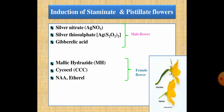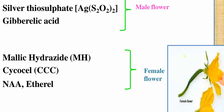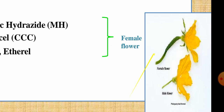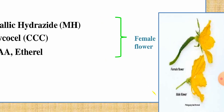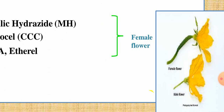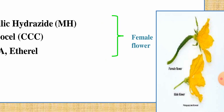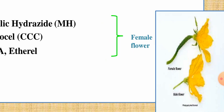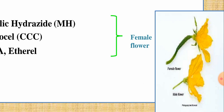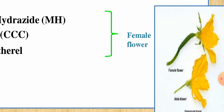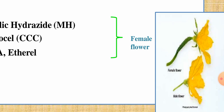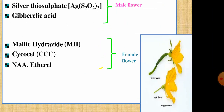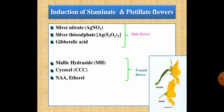This is the male and female flower of cucurbits. When you see the male flower, there is no enlargement of the ovary. In the female flower, the portion attached beside the flower shows an enlargement of the ovary. This is the mark of identification of male and female flowers.